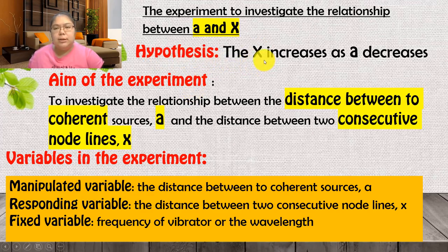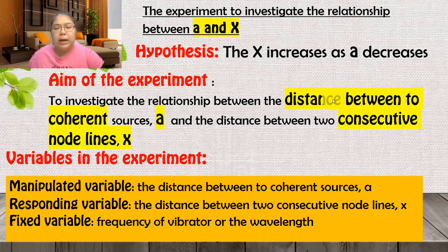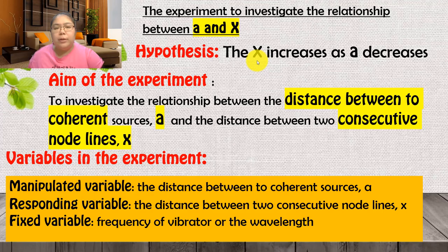The hypothesis is: X increases when a decreases, so they are inversely proportional. When you state the aim, you must mention the full name — you cannot just say 'a' and 'X' without introducing them first. For the hypothesis, the aim, and the variables, you need to write full sentences.